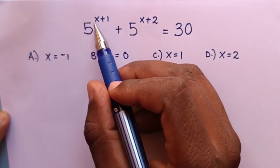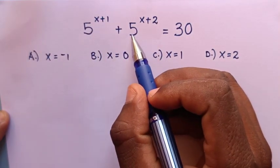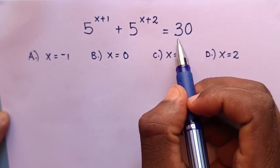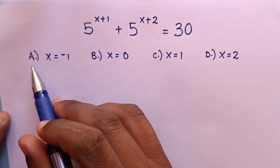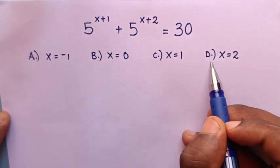Hello, how to solve 5 power x plus 1 plus 5 power x plus 2 equals 30, to choose between answer A, B, C, or D.